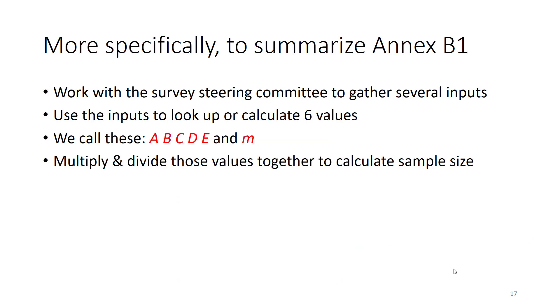So big picture, to summarize Annex B1, you need to work with the Survey Steering Committee to gather several important inputs and then you use those inputs to look up or to calculate six values. These values have longer names, but our shorthand names for them are A, B, C, D, E, and little m. And then once you've gathered those values, you multiply them and divide them in ways that we will show you to calculate the important outcomes of the sample size calculation.